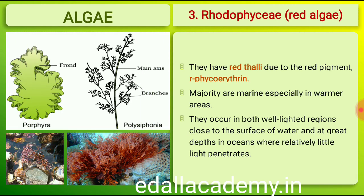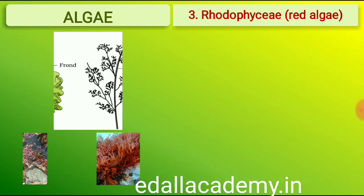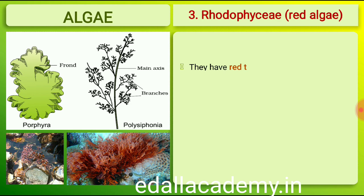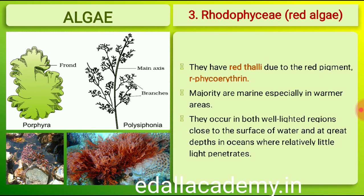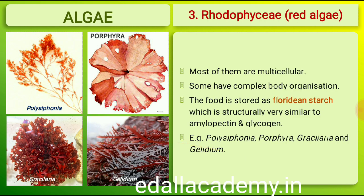The members of Rhodophyceae are commonly called red algae because of the predominance of the red pigment r-phycoerythrin in their body. The majority of red algae are marine, with greater concentrations found in warmer areas. They occur in both well-lighted regions close to the surface of water and also at great depths in oceans where relatively little light penetrates. The red thalli of most red algae are multicellular, and some of them have complex body organization.